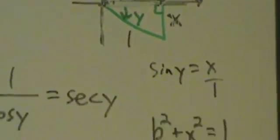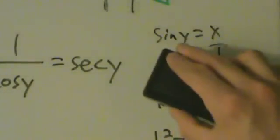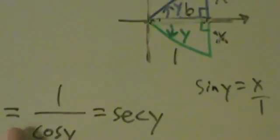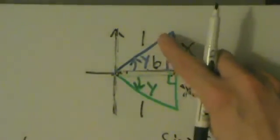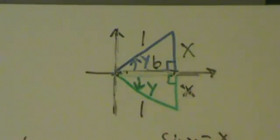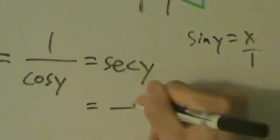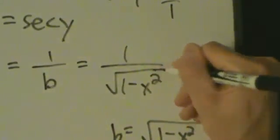So now what's secant of y? Secant is 1 over cosine, which means hypotenuse divided by adjacent. In both of these triangles, that's 1 divided by b. So secant of y is 1 divided by b, and b is √(1 − x²). So that gives us 1 over √(1 − x²), and that's where that formula comes from.